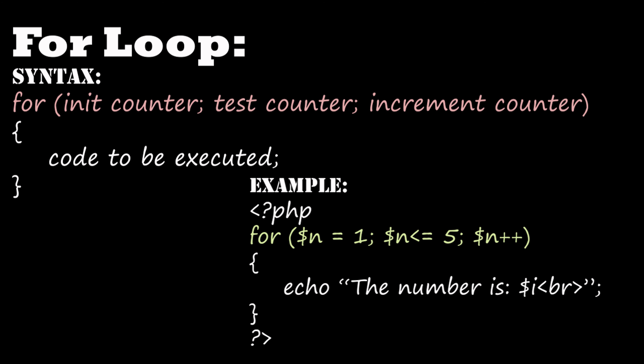The increment counter increases the loop counter value. We can give decrement or increment. If we give n++ in the increment counter, the first value will be 1, it checks the test counter whether it is less than or equal to 5, and makes the value 1+1 = 2. Again the code executes, it checks 2 <= 5, increments to 3. Likewise the process continues. This is the syntax for the for loop — initialization, condition, and increment inside the bracket.